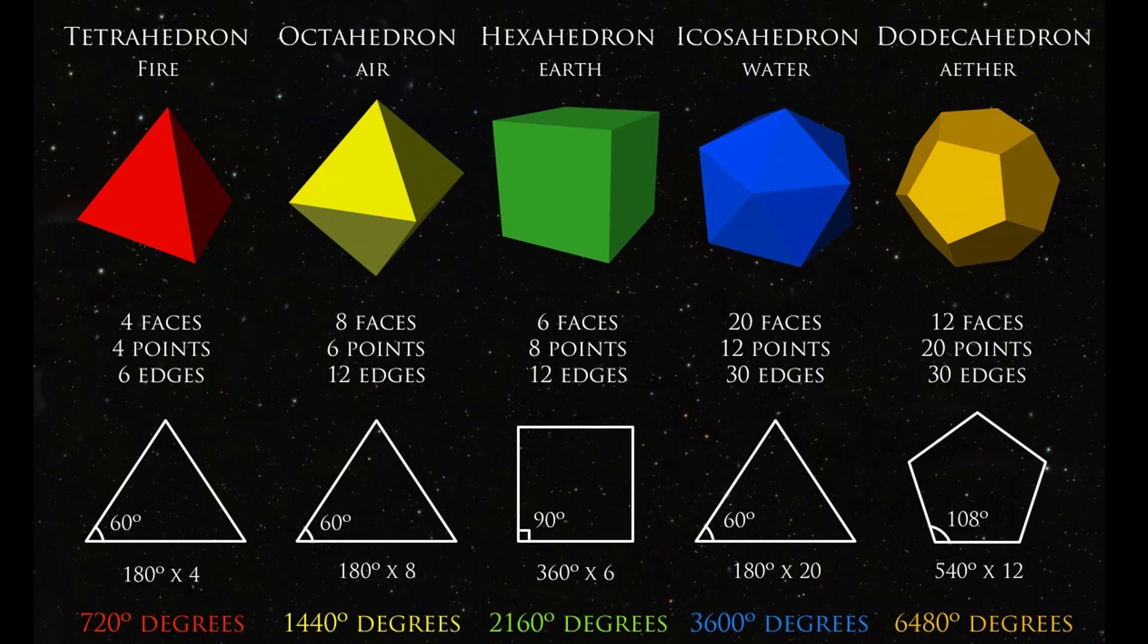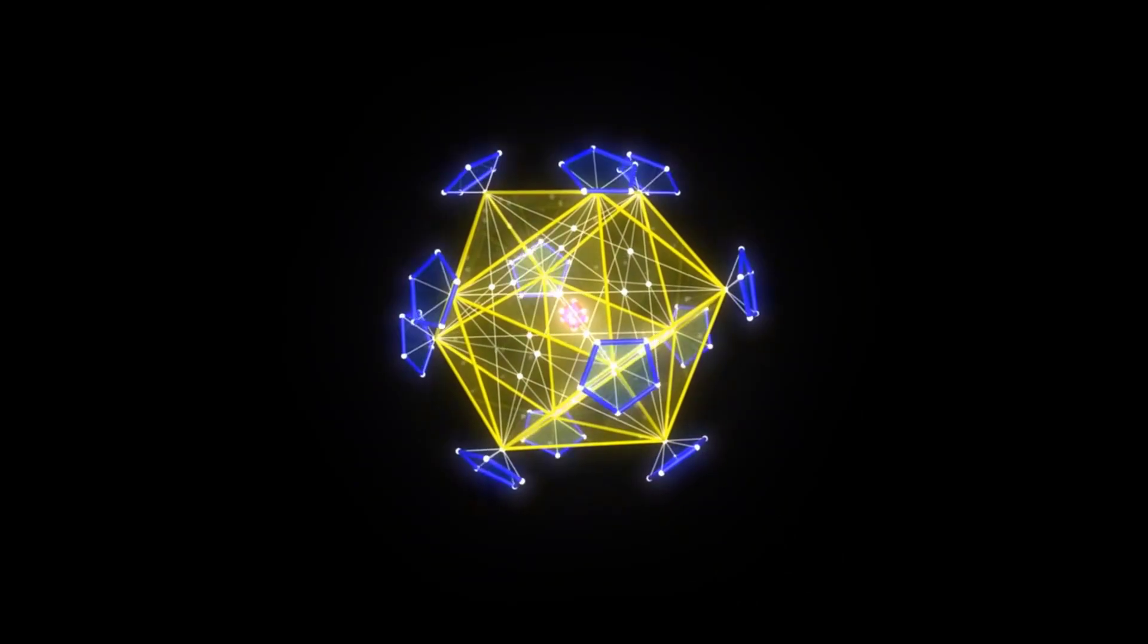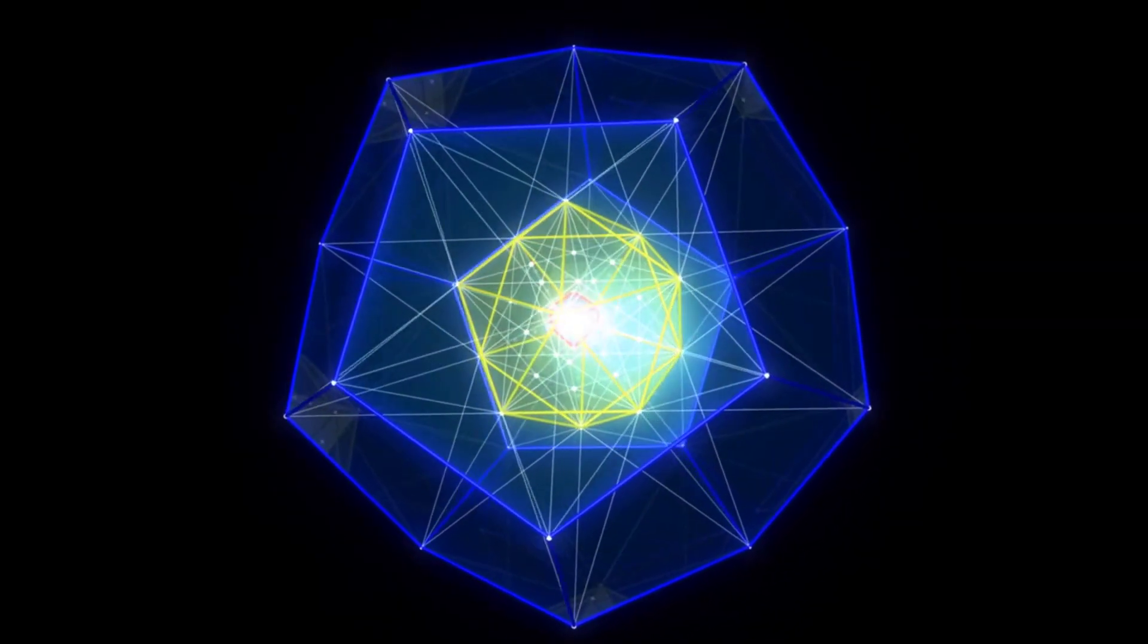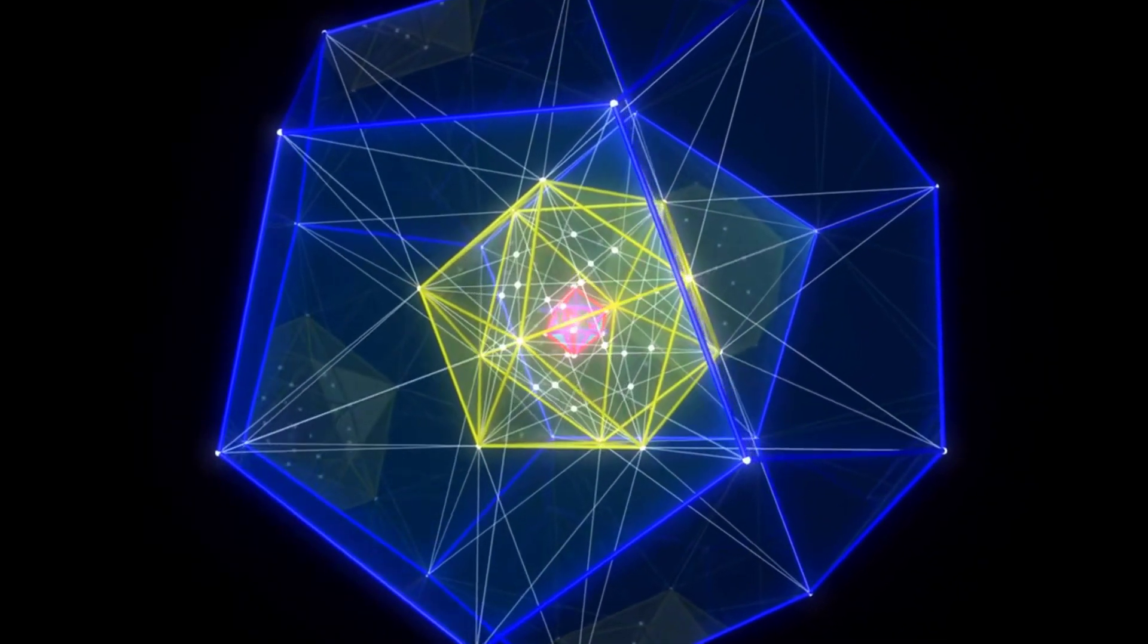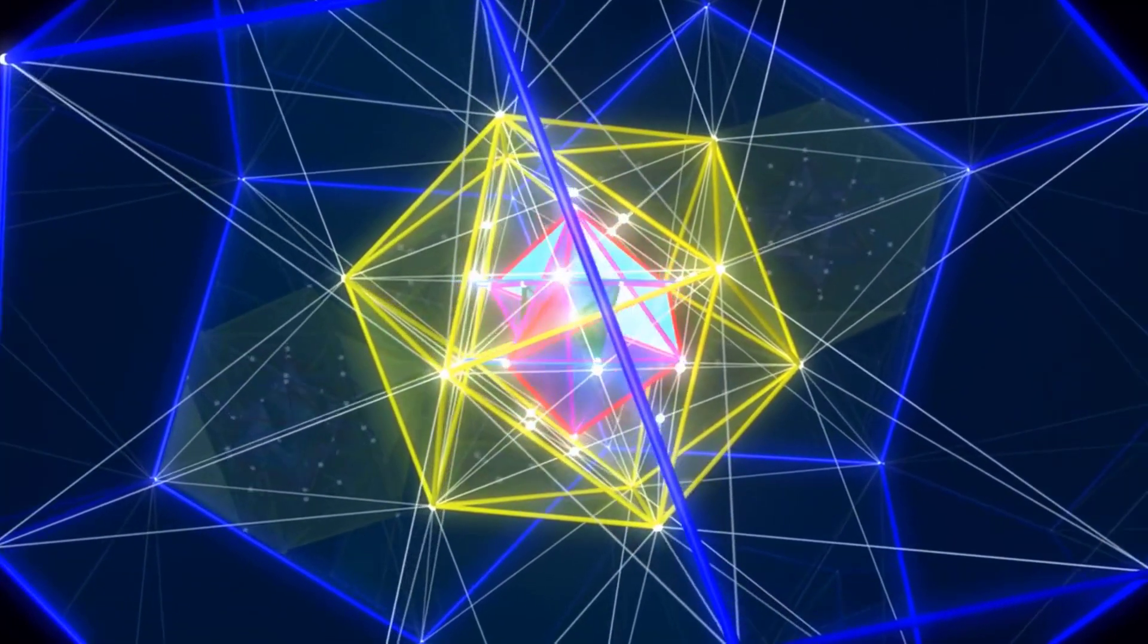The platonic solids arrange themselves in what chaos theory calls fractal patterns, weaving a matrix in space interconnecting atoms with the stars. The scales of the platonic solid shapes are different but the ratios between them are still the same.